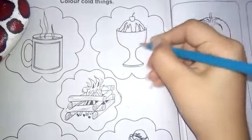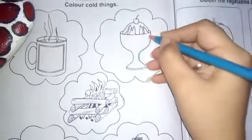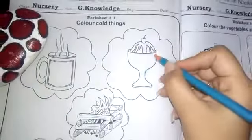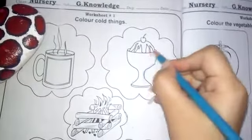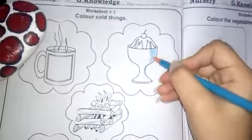And then you have to complete. Okay, neat and clean. You have to color neat and clean. You have to complete the ice cream cup.